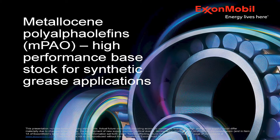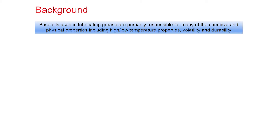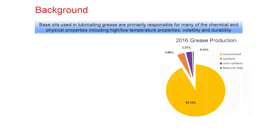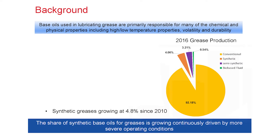This presentation is about high-viscosity metallocene polyalpha olefin, MPAO, base stocks for synthetic greases. Base oils significantly impact the chemical and physical properties of lubricating greases. The pie chart on the right shows that in 2016, more than 90% of greases produced globally were based on mineral oil base stocks, while only 4% contained synthetic base oil blends. However, demand for synthetic greases grew at a pace of about 5% per year since 2010.